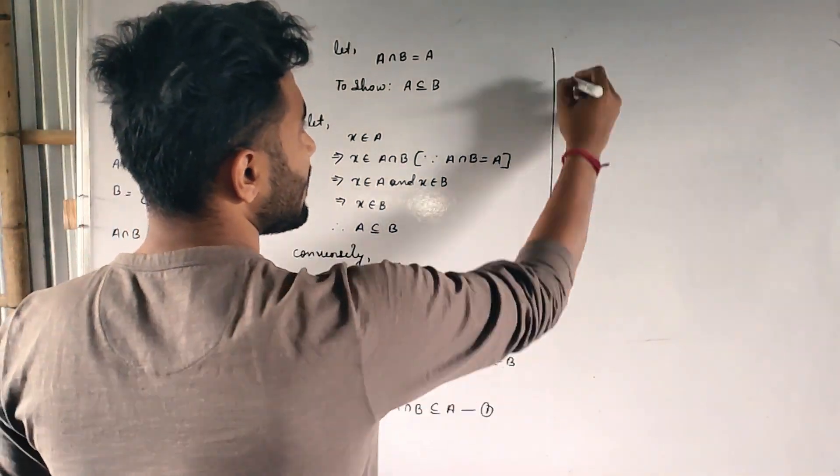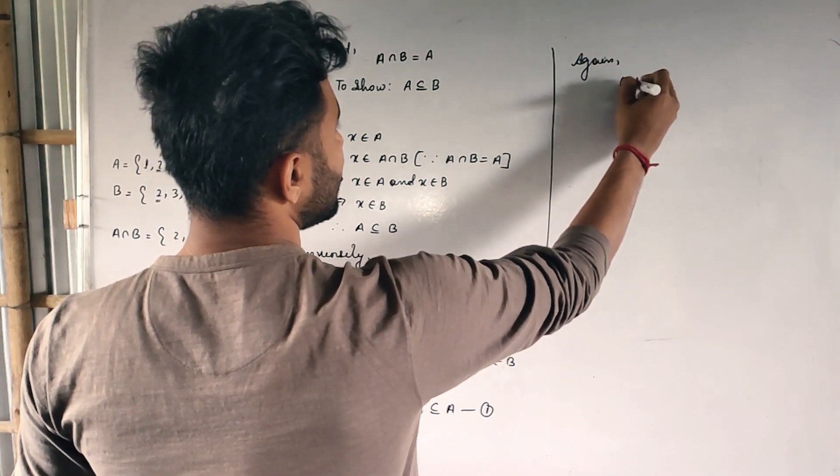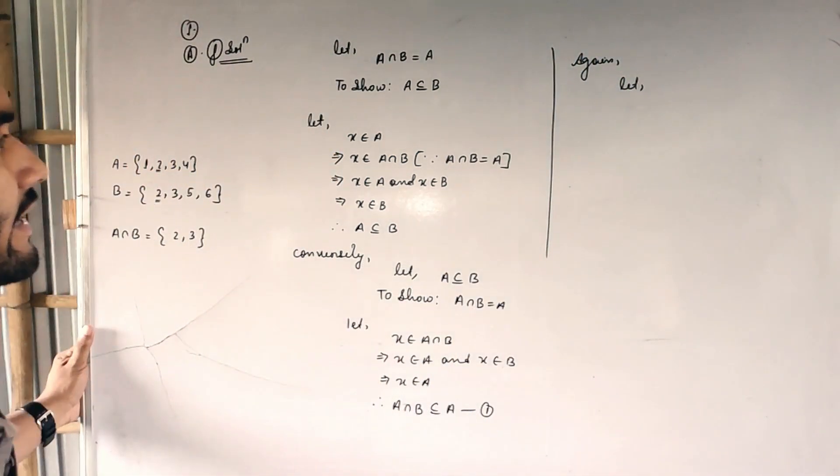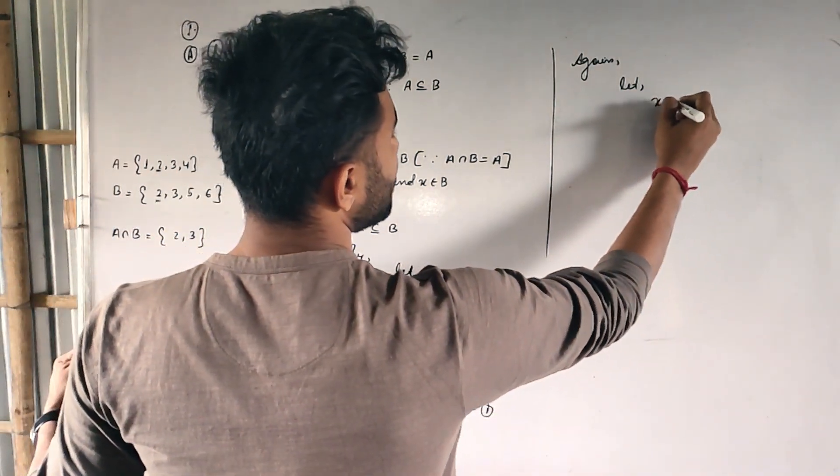The next part. Again, again let, again let. This time I will start with A. Again let X belongs to A.